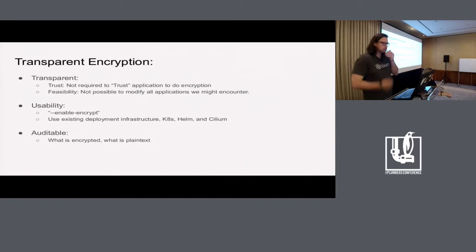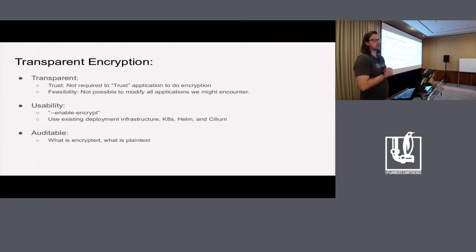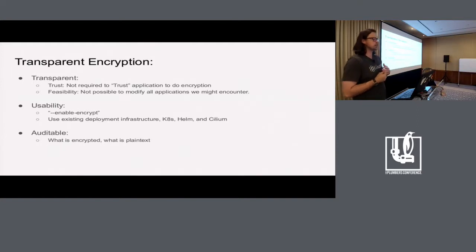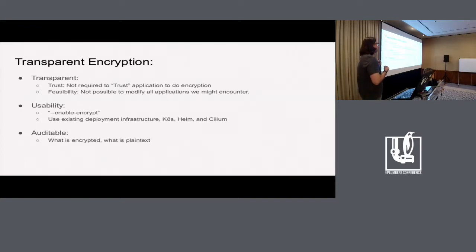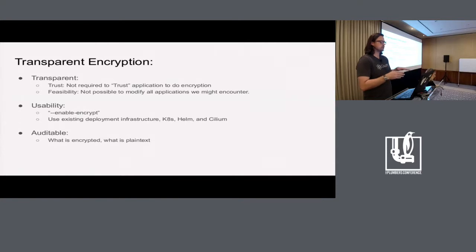So what do we mean by transparent? First, we want to make sure that we don't trust applications. Because we are the agent running around with a bunch of pods, we don't necessarily trust the pods themselves to do encryption. It's not feasible to add encryption to every application, so we want it to be transparent — you turn it on, and then everything on the node is encrypted. It also needs to be usable: we can't expect users to take action every time a new node comes online. Finally, it needs to be auditable so you can verify encryption is working, and if it stops working, you have a hard break — you block or drop traffic to ensure no unencrypted data goes on the wire.